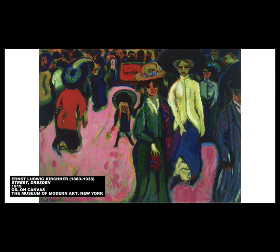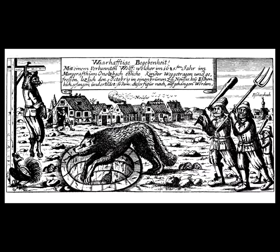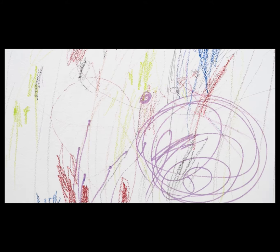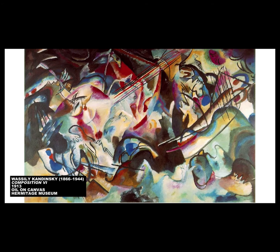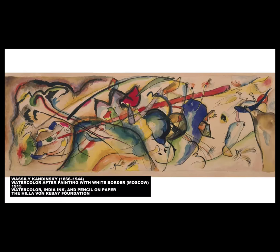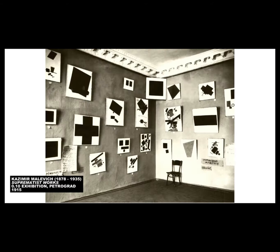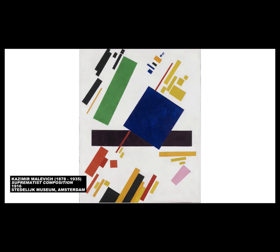German Expressionist Ernst Ludwig Kirchner used abstraction and rich, unreal colors to depict the chaos and anxiety of the city street. His contemporaries Franz Marc and Vasily Kandinsky cited influences as diverse as tribal art from Africa, medieval German woodcuts, Russian folk art, and art nouveau. While Marc pursued abstraction to connect with the natural world, Kandinsky's interest was to commune with the spiritual — he claimed his art was what the spectator lives or feels under the effect of form and color. For Kandinsky, abstraction was realism, since emotion and consciousness are realities. Kazimir Malevich called his brand Suprematism, citing the supremacy of pure artistic feeling.